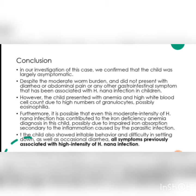The child also had anemia, and all these signs indicated a parasitic infection causing these fluctuations. The anemia was due to impaired iron absorption caused by the H. nana parasite. When a history was taken from the mother through a prolonged interview by nursing staff, she revealed the child had shown irritable behavior, difficulty settling, and occasional diarrhea — all direct indications of a high-intensity H. nana infection.